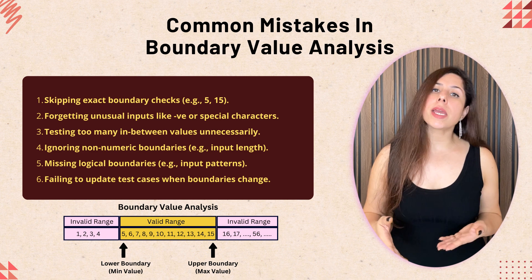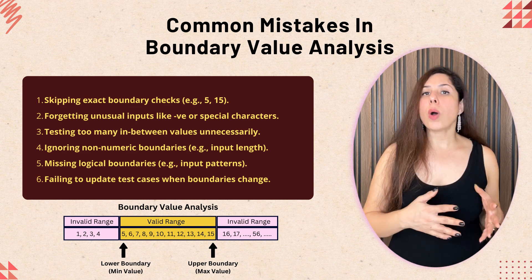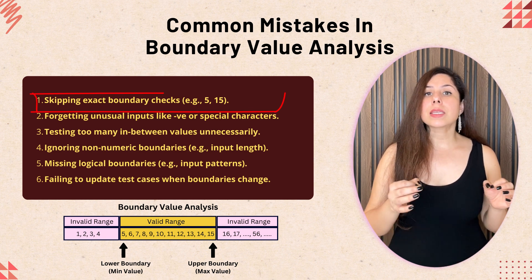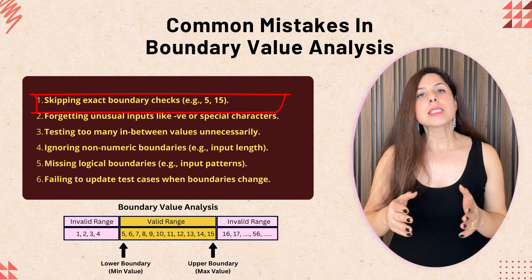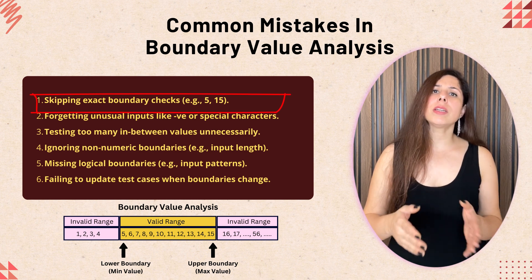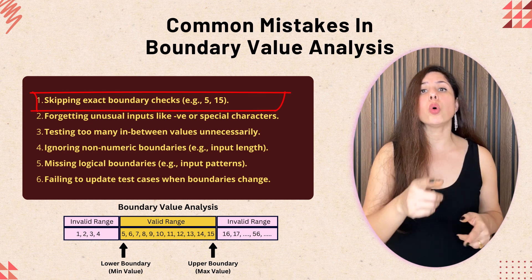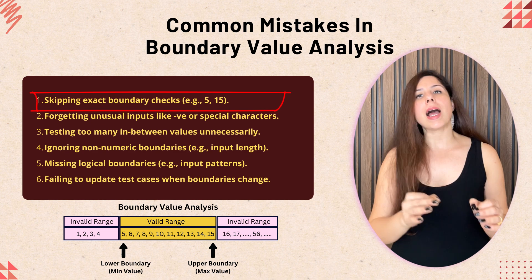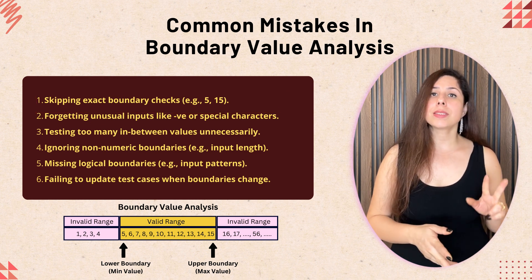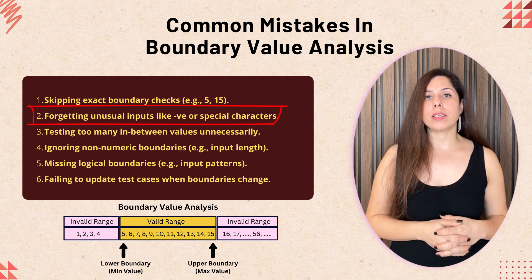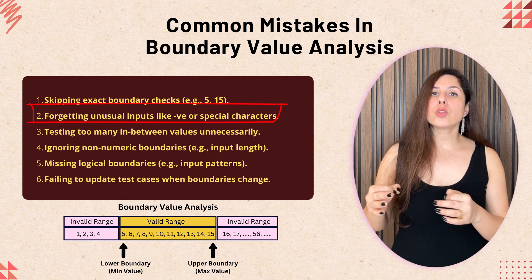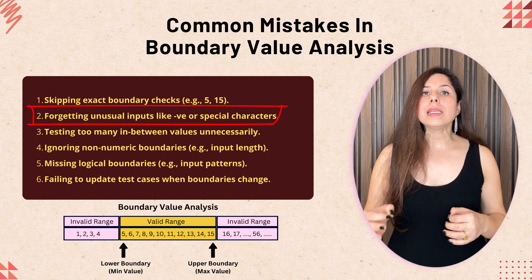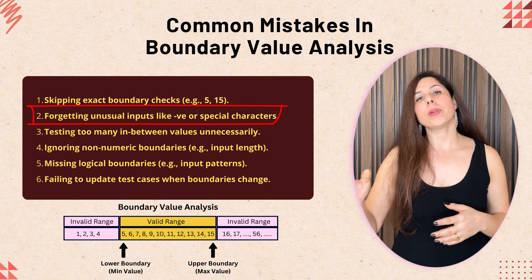Now, what are the common mistakes to avoid when using boundary value analysis? First, skipping the boundary check — sometimes testers skip testing the exact boundary values. For example, if the range is 5 to 15, they may focus only on values just outside the boundaries like 4 and 16, missing issues that occur precisely at the limits like 5 or 15. Second, overlooking negative or unusual values — while testing within the boundary, don't forget to check unusual values outside it, like negative numbers or non-standard inputs, as these might trigger unexpected errors if not handled properly by the system.